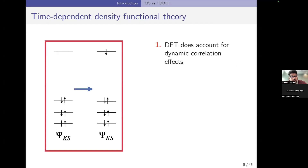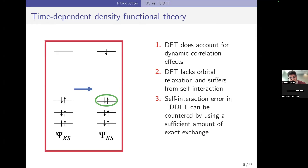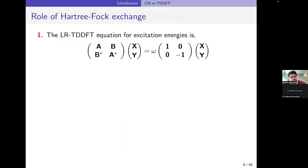Density functional theory does account for dynamic correlation effects, which comes from the exchange-correlation functional being used. However, DFT lacks orbital relaxation and also suffers from self-interaction errors. As you can see here, self-interaction and the lack of orbital relaxation are two major sources of error in TDDFT, and this plays a big role when you're doing x-ray spectroscopy.